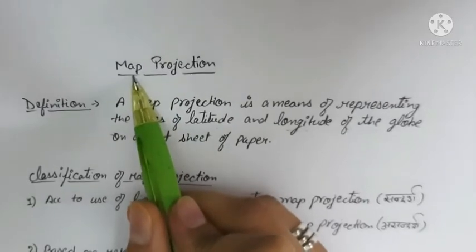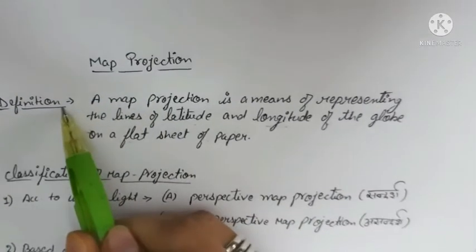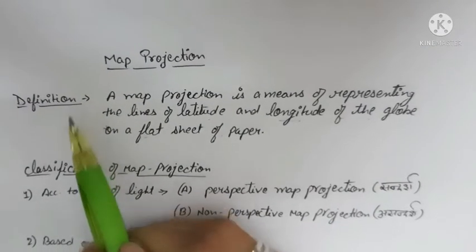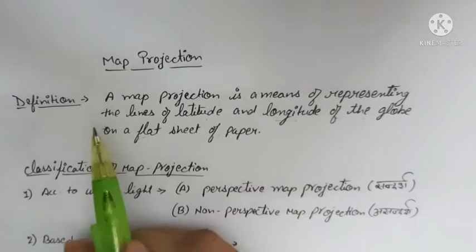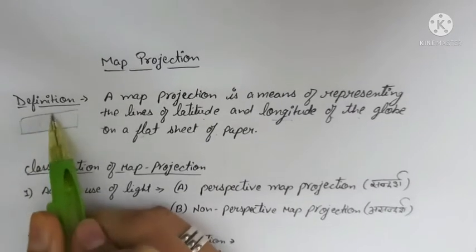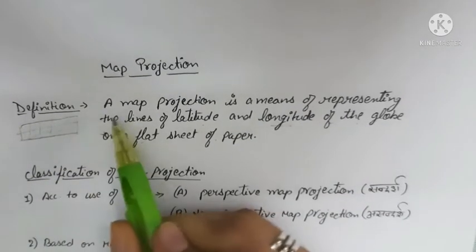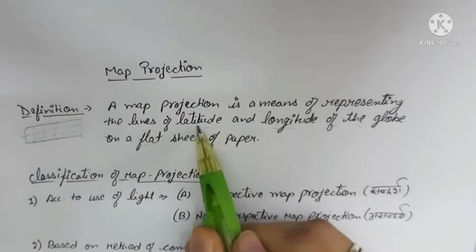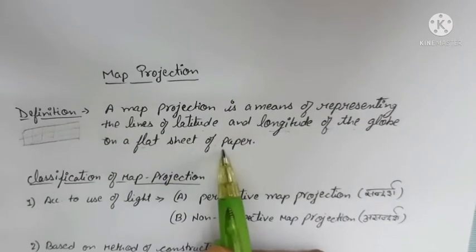Students, now we are starting map projection. First of all, we will talk about the definition. A map projection is a means of representing the lines of latitudes and longitudes of the globe on a flat sheet of paper.